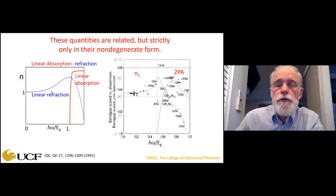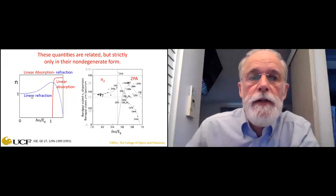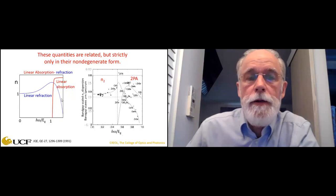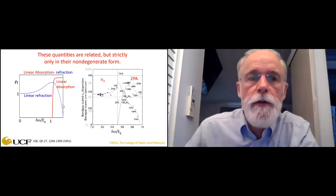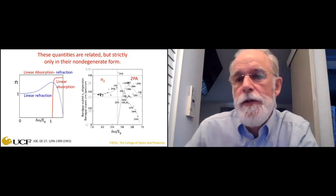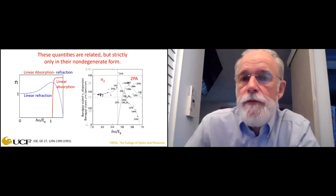Let's go back and look at linear absorption. The linear absorption turns on where ℏω/E_gap = 1. Here's the linear refractive index — normal dispersion. Above that edge, the index gets very small and could drop below one. Notice the similarity between the one-photon and two-photon cases: the nonlinear refraction turns negative at about two-thirds of the gap, analogous to what happens in the linear case above the absorption edge.